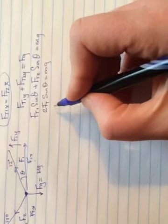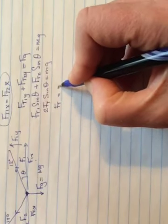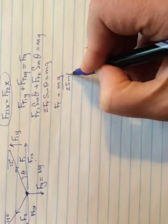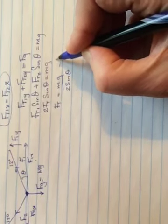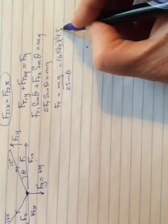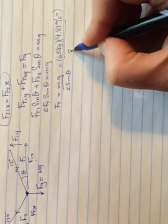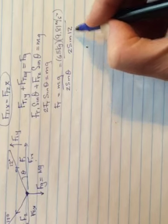And so, when you do that, or excuse me, I wanted you to solve for FT, so when you do that, you would divide by the 2 and the sine theta, and now fill your numbers in. So it was 65 kilograms.